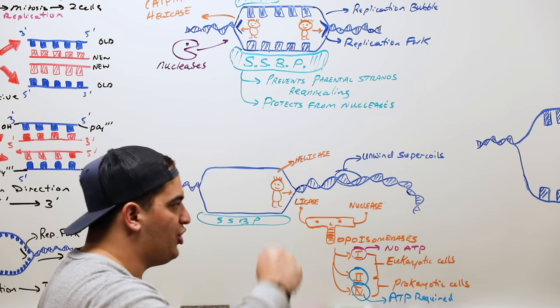This strand — where the DNA polymerase moves continuously toward the replication fork with just one RNA primer and then DNA the rest of the way — is called the leading strand.